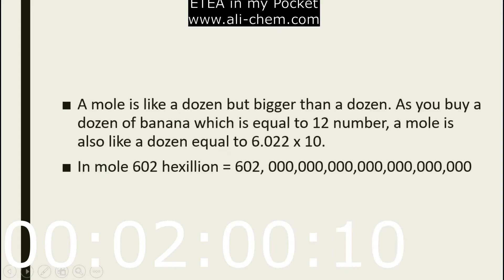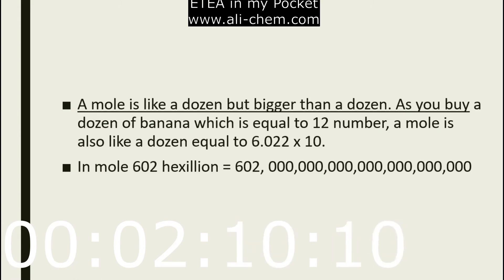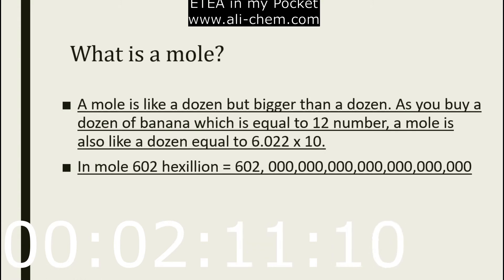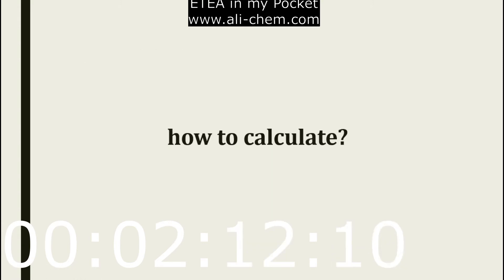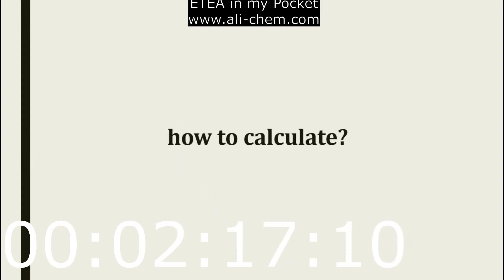A mole is like a dozen, and we're going to talk about this in detail in the next video. One mole is 602 hexillion — you can count the zeros. This is what a mole is, and we'll discuss how to calculate the mole in the next video.